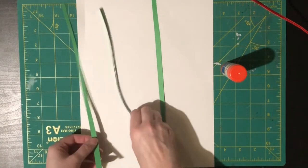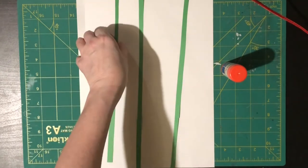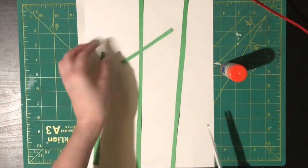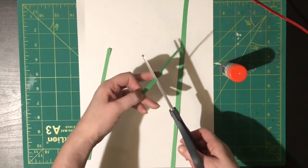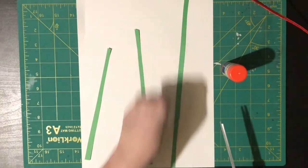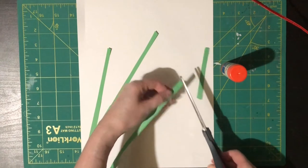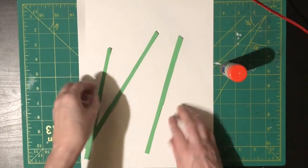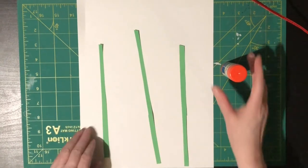Now that I have my three strips, I want to do them in differing heights. So I'm going to trim a little bit. So I have different heights. And then what you want to do is glue them down onto your paper.